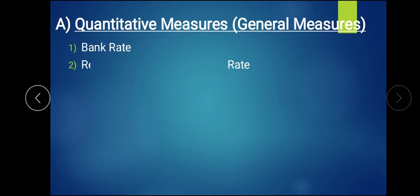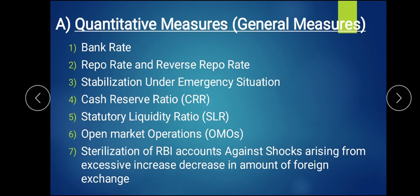There are seven types of quantitative measures. The first three - bank rate, repo rate, reverse repo rate, and stabilization under emergency - have already been taught. Let's recapitulate: bank rate is the rate at which RBI lends money to commercial banks. Whenever commercial banks face a money shortage, they take loans from RBI, not from the public.